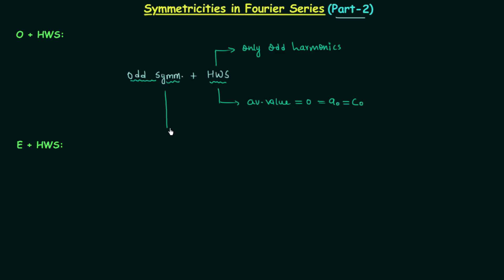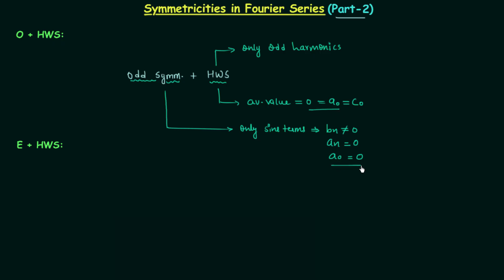Now for odd symmetry: when the given signal is an odd signal, the Fourier series expansion will have only sine terms. This implies Bn is not equal to 0, An is equal to 0, and A0 is also equal to 0. We are getting A0 equal to 0 from both symmetries, and now we will combine all these important results for the final conclusion.